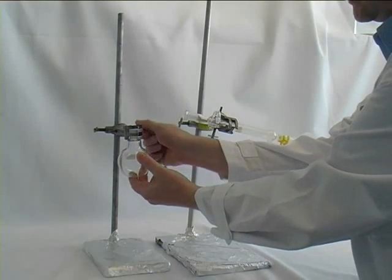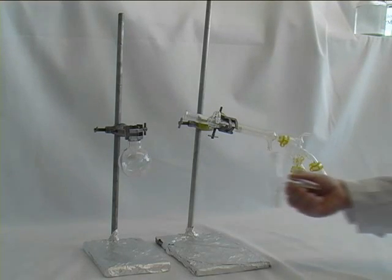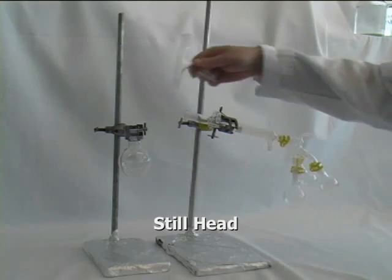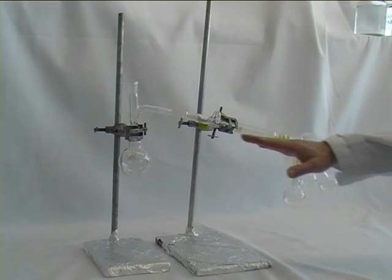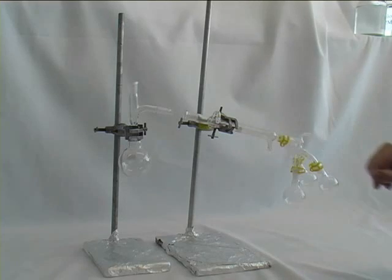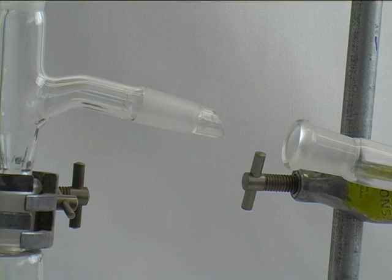On the left retort stand, we assemble now our round bottom flask. And on top of that goes the so-called still head. Now, it has to be assembled in a parallel fashion, so that the still head can be attached to the condenser easily.